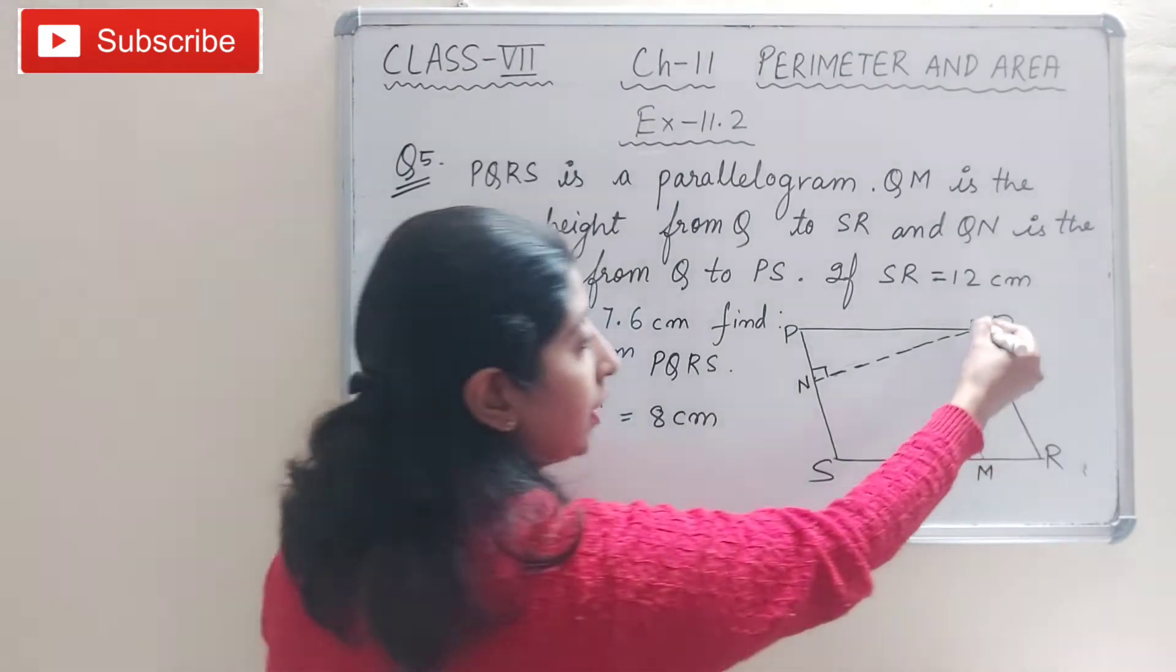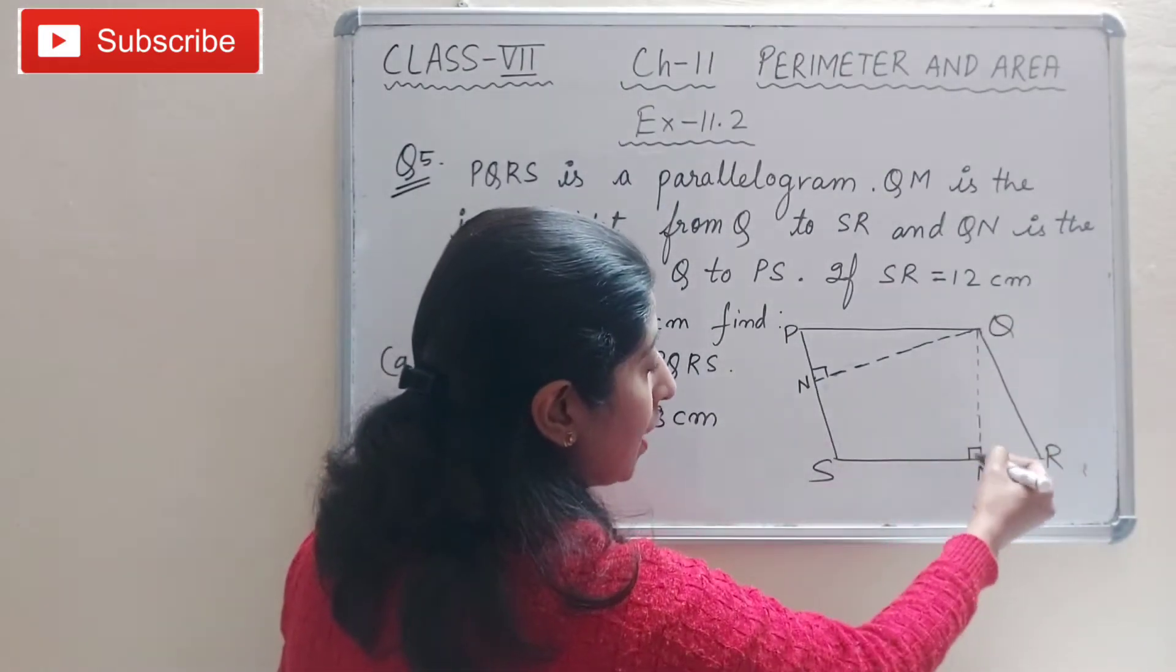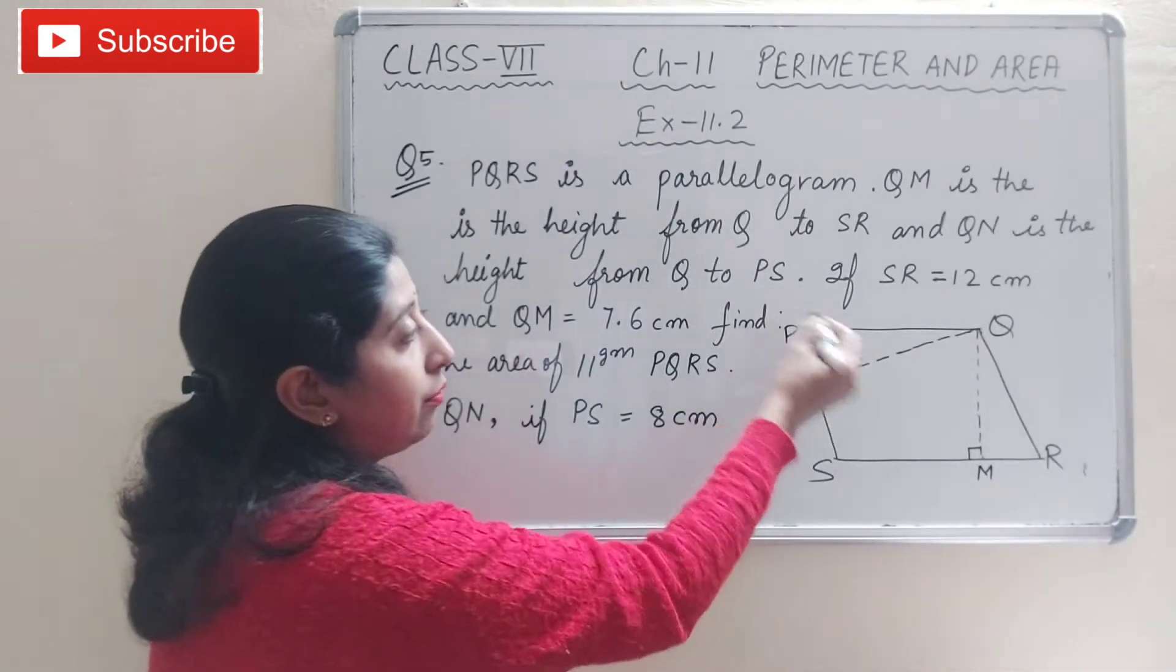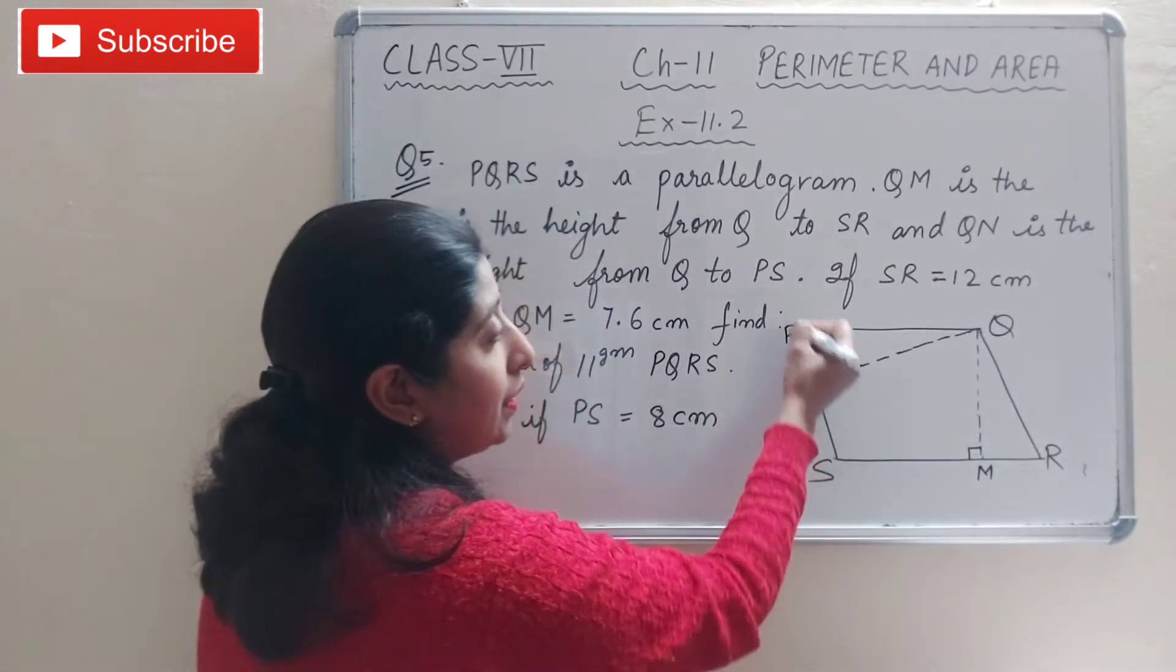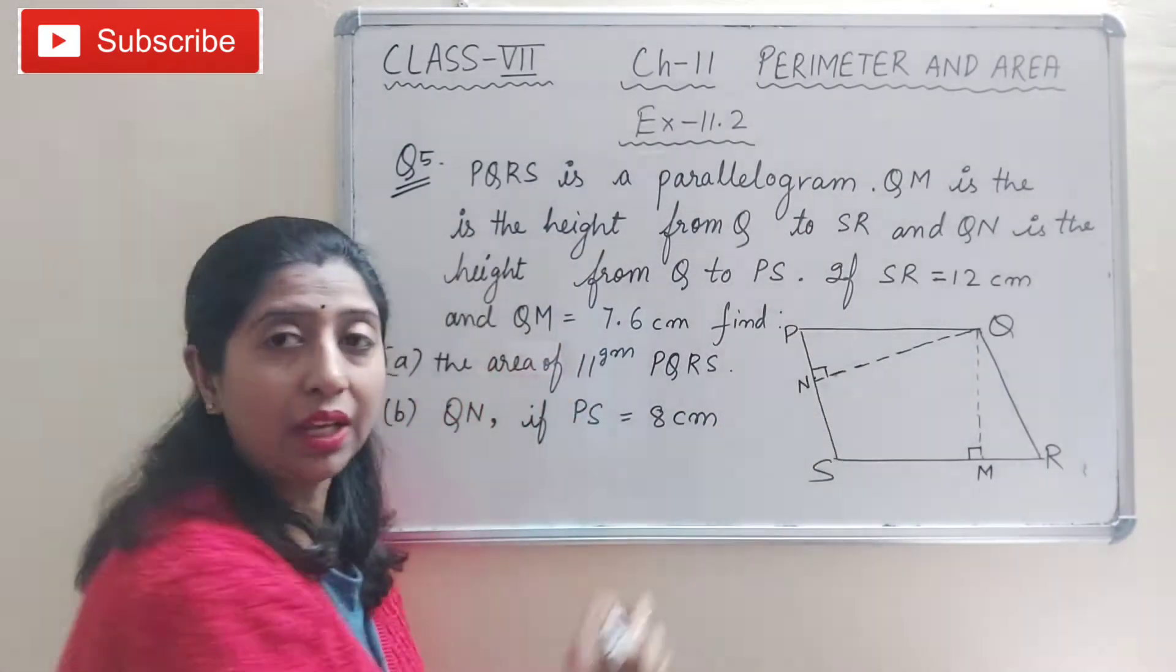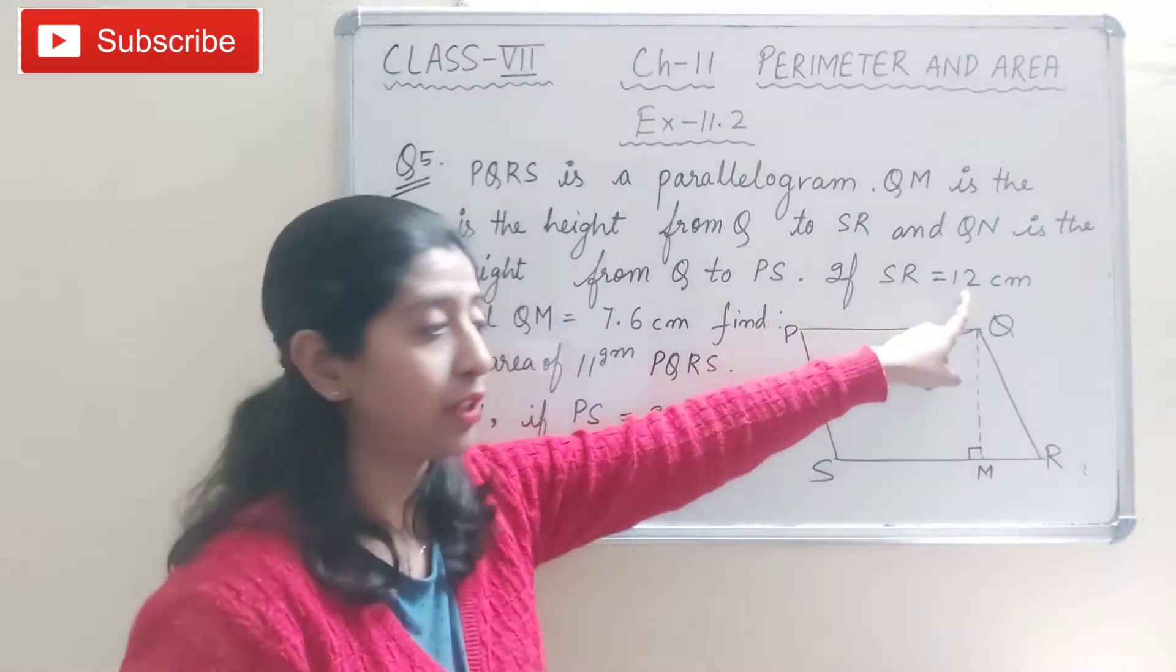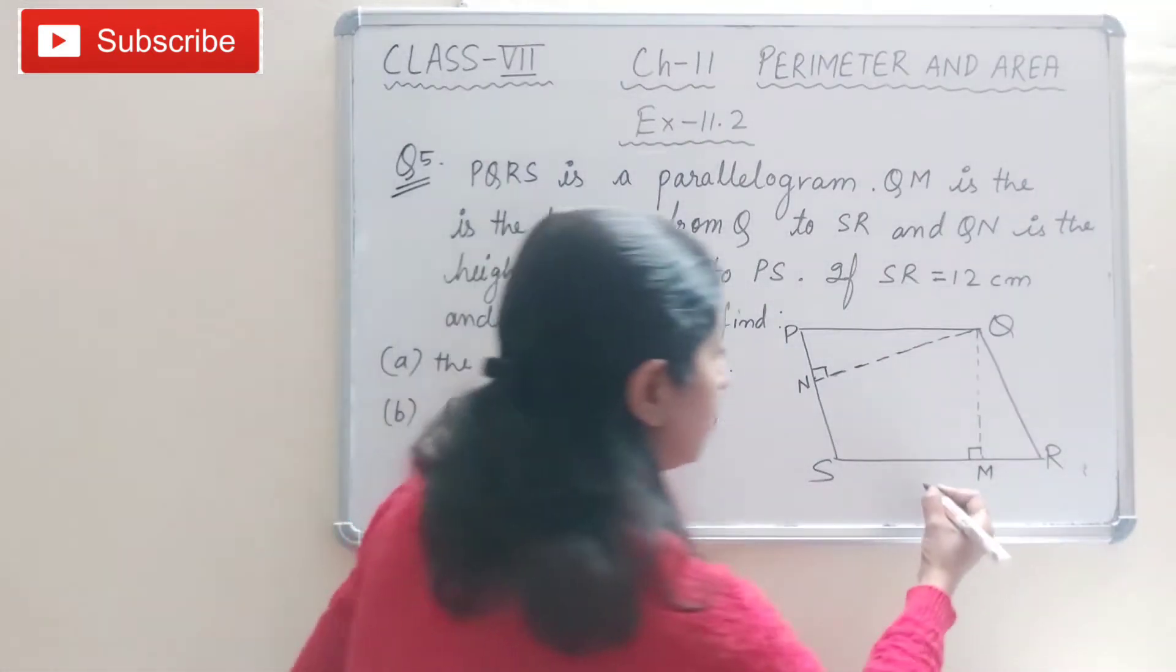If we take QM as height, then SR will be base. And when we take QN as height, then PS will become the base.